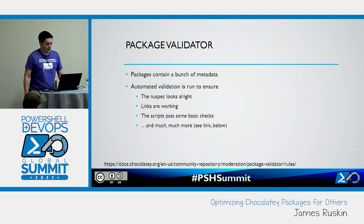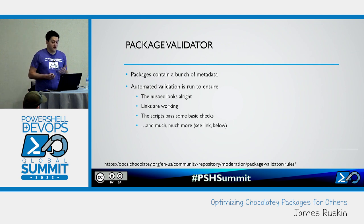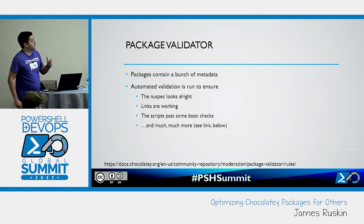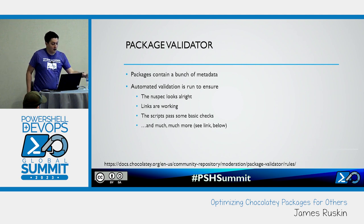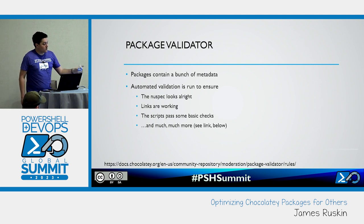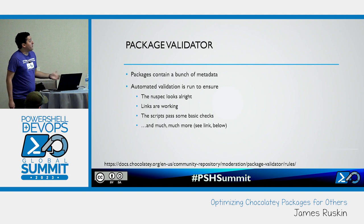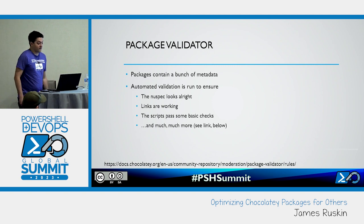The first step packages go through when they're pushed to the CCR is package validation. If you've built a package before from a template or from scratch, you're probably going to have dealt with a nuspec file. This is an XML file contained within each package — nearly what NuGet uses, though it's been extended in a few ways for Chocolatey packages. There are around 70 automated rules run against each package after submission, making sure that links to documentation and source are present and working, there's a description, non-functional chunks of template code have been removed, popular files that shouldn't be there like .gitignore aren't included, the various scripts pass muster, and checksums are used if appropriate.